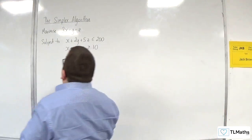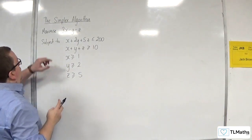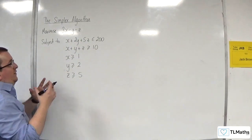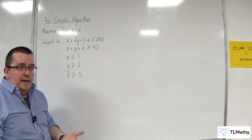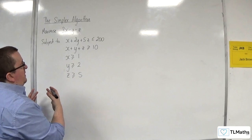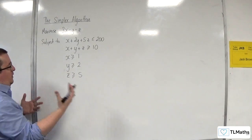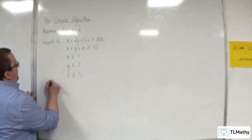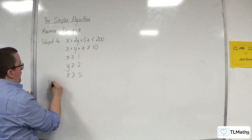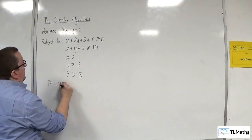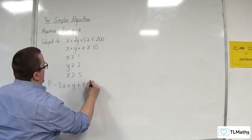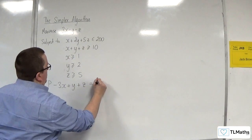The first thing is that maximising 3x take away y take away z is equal to p. I'm going to move everything onto one side of the equation to get equal to 0 on the right-hand side. So, taking 3x from both sides, adding y to both sides, adding z to both sides gives p minus 3x plus y plus z equal to 0.